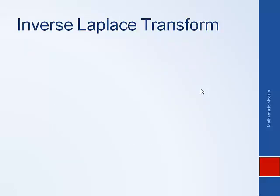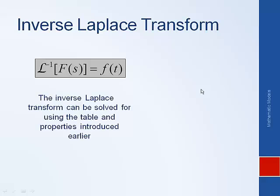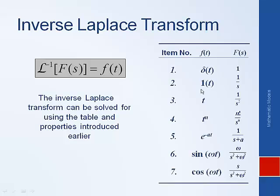In order to do that, we need to understand the inverse Laplace transform. The inverse Laplace transform is exactly the opposite of the Laplace transform. The Laplace transform takes a time function and generates a Laplace function; the inverse goes the opposite direction. Just like we used tables and properties to solve Laplace transforms, we can also use them to do inverse Laplace transforms — except we look in the F(s) column to find the corresponding f(t).